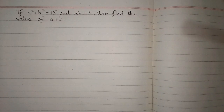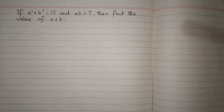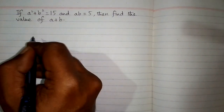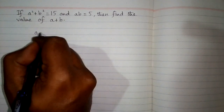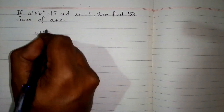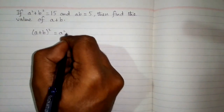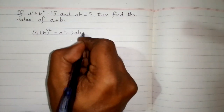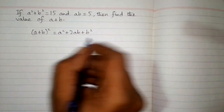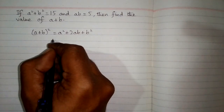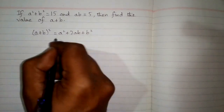If a squared plus b squared is equal to 15 and ab is equal to 5, then find the value of a plus b. We will use the algebraic identity: a plus b whole square is equal to a squared plus 2ab plus b squared in order to find the value of a plus b.